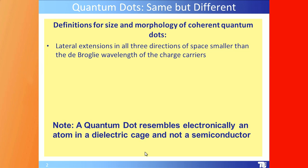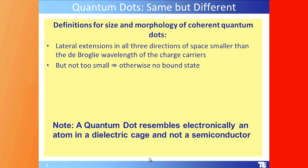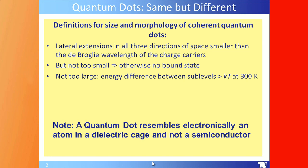What is a quantum dot? The term is often misused. It means that the lateral extension in all three directions of space are smaller than the de Broglie wavelength of the charge carriers. If they are too small, there are no bound states — in contrast to quantum wells, where you always have bound states. You also don't want them too large, because the energy difference between the sub-levels should be larger than kT at 300 Kelvin, otherwise you populate the ground state and excited states simultaneously.